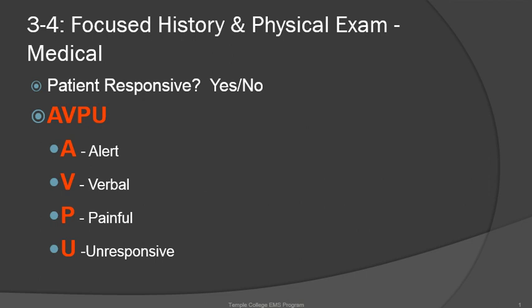Place — if you ask the patient, where are you located at, where are you at right now, and they can answer this question appropriately, they'll be given a point. Time — what time is it? If the patient can answer that, they'll receive a point. Events — events leading up to the call, or can you tell me what's going on right now? If the patient can answer these questions, they'll be given a point for this section.